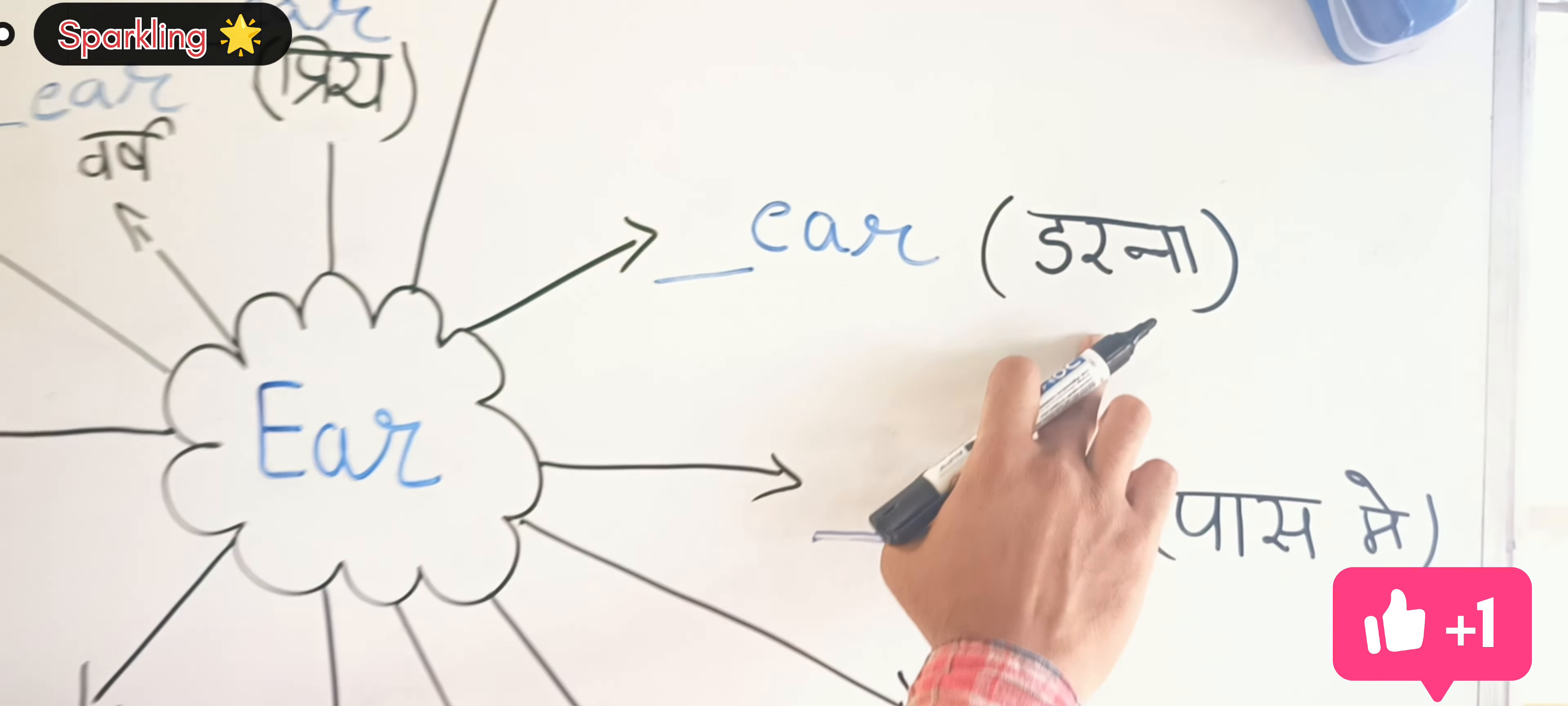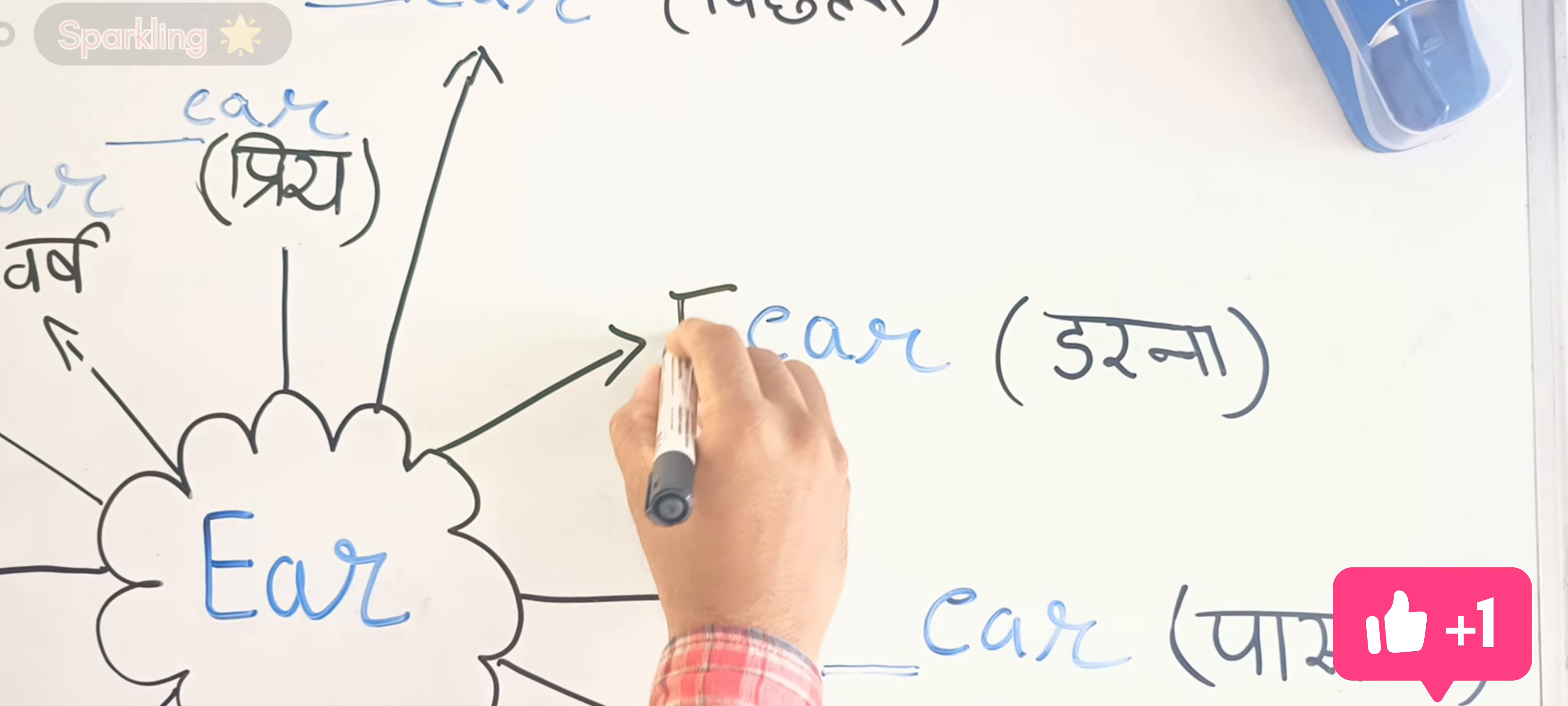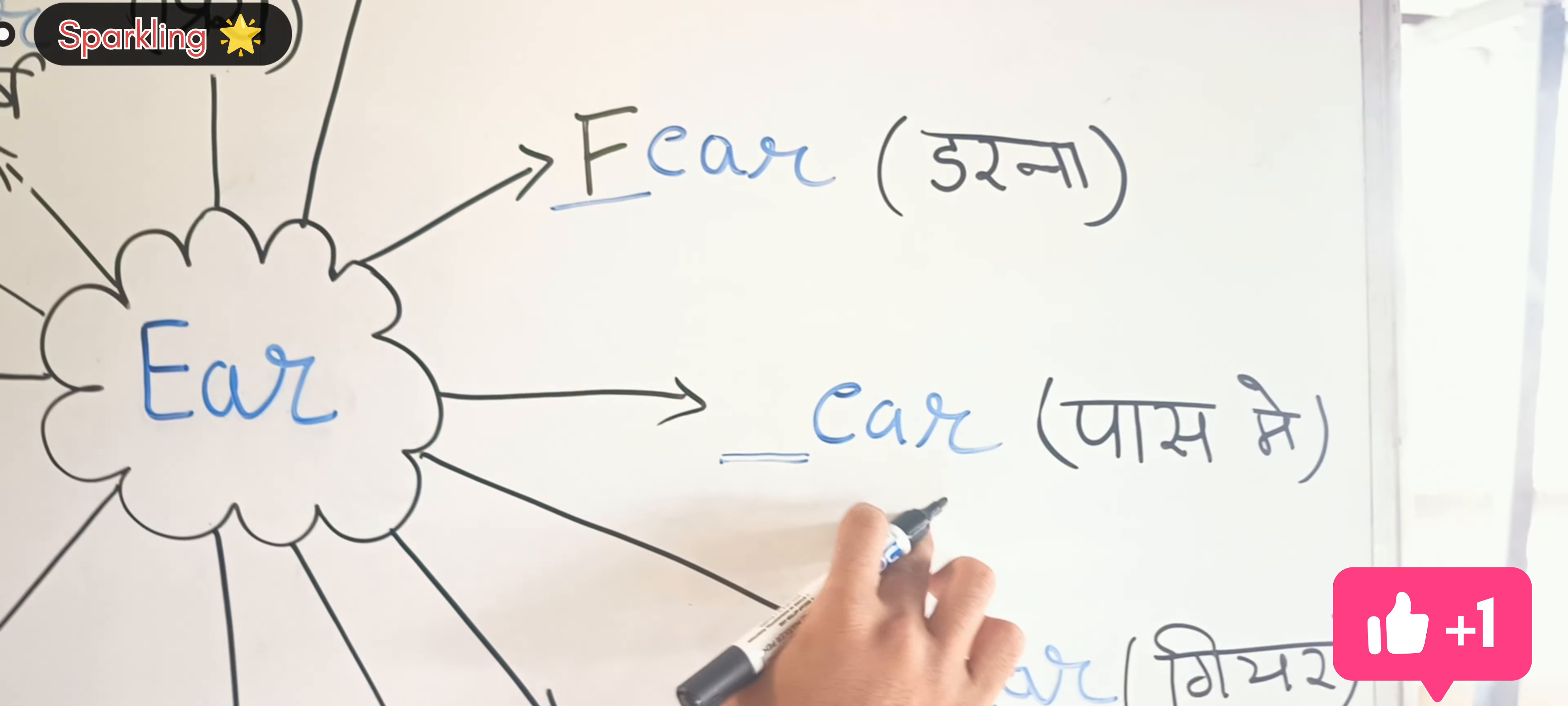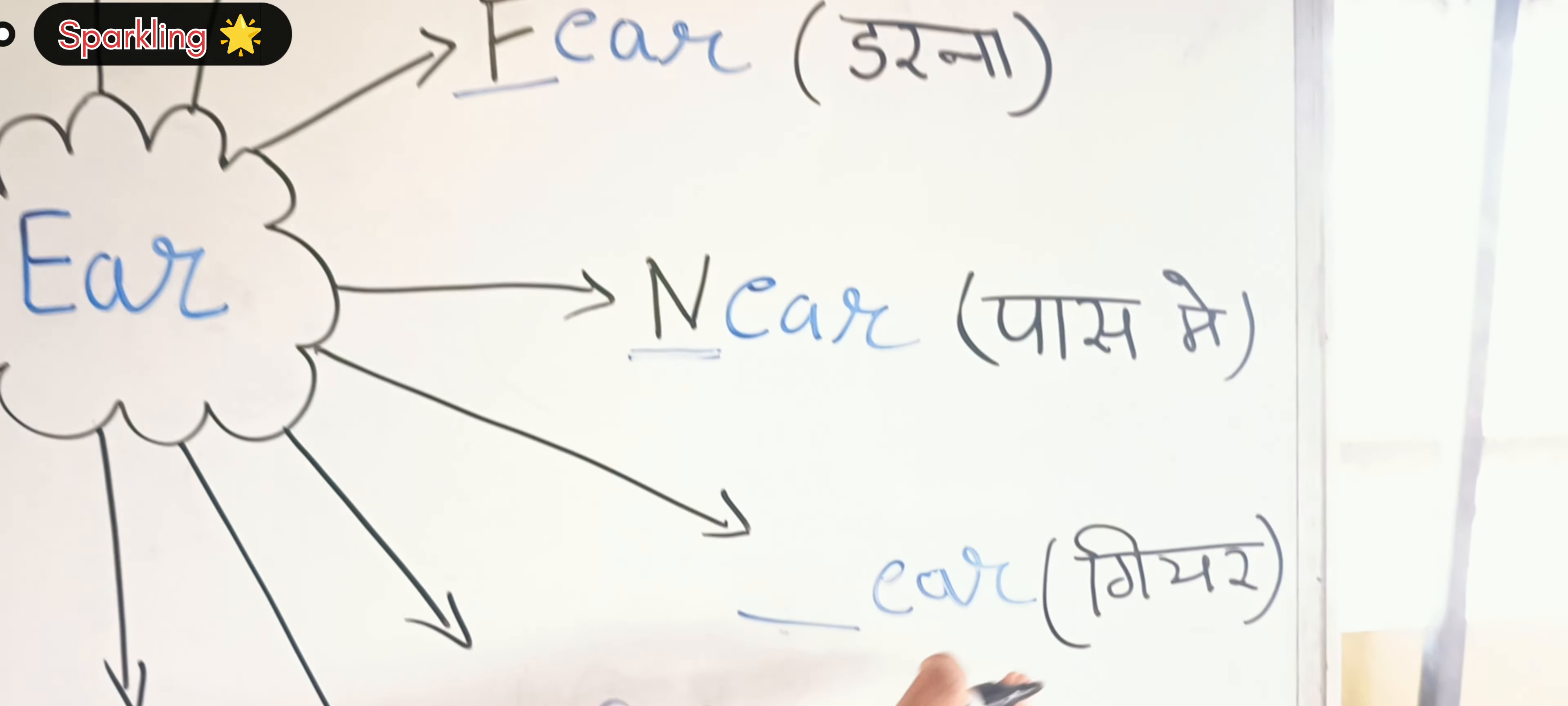The first word - its meaning in Hindi is 'darna', so in English it's 'fear'. Next, in Hindi 'paas mein', in English 'near'. Then we have 'gear'.